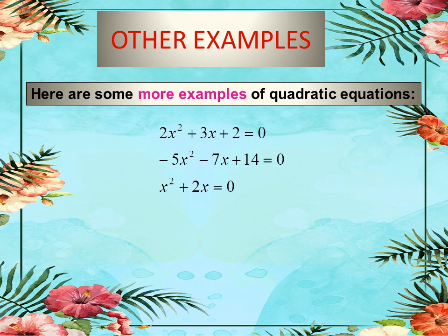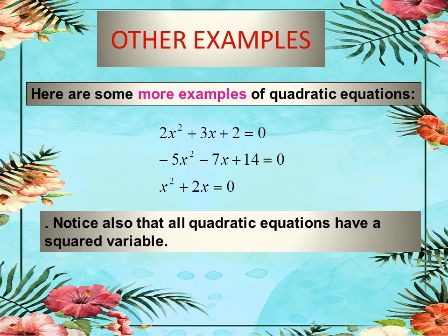Here are some examples of quadratic equations: 2x² + 3x + 2 = 0, and −5x² − 7x + 14 = 0. Notice that all quadratic equations have a squared variable. If your equation does not have a squared variable, it is not a quadratic equation — keep this in mind.